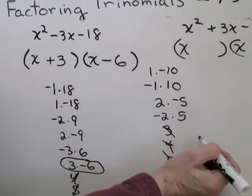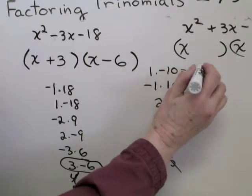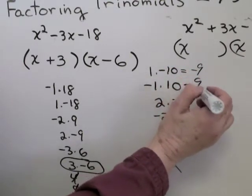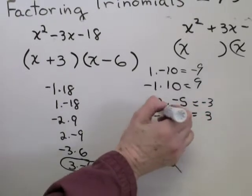Now, of all of these groups, only 1 is going to be the answer. I need the group that adds up to positive 3. 1 and minus 10, what does that add up to? Minus 9. 9. Minus 3. 3. There is the group I want.